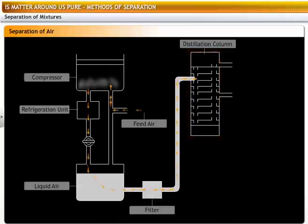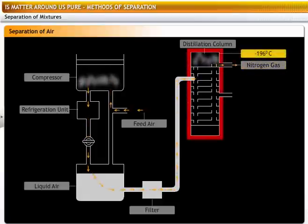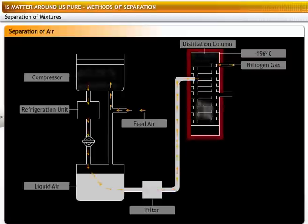On warming, liquid nitrogen boils off first to form nitrogen gas as it has the lowest boiling point of minus 196 degrees centigrade. This nitrogen gas collects at the top of the fractional distillation column.